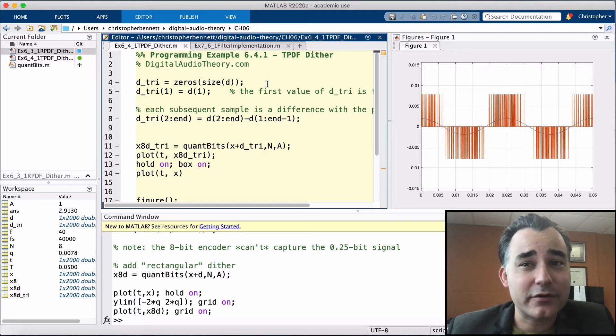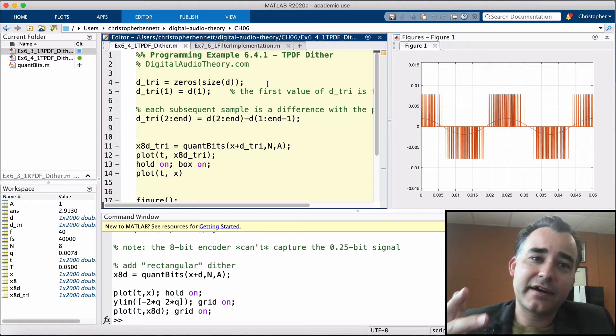However, there are 6 throws that can produce a 7: 6 plus 1, 1 plus 6, 5 and 2, 2 and 5, 4 and 3, 3 and 4.